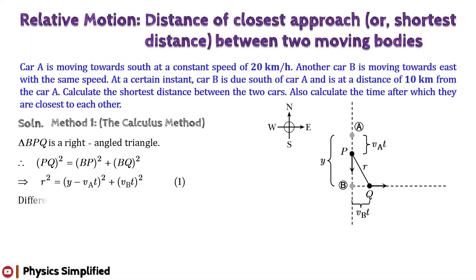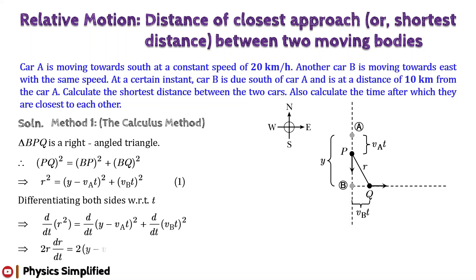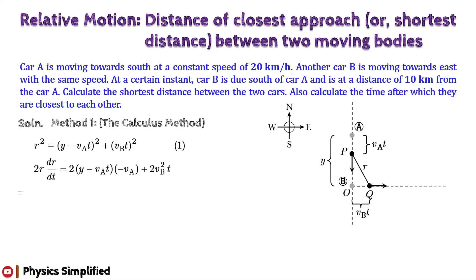Differentiating both sides of the equation with respect to time t, we get: 2r·(dr/dt) = 2(y − v_A·t)(−v_A) + 2·v_B²·t. From the concept of maxima and minima, for the separation r to be a minimum, dr/dt = 0. So from the above equation, we get: −y·v_A + v_A²·t + v_B²·t = 0.